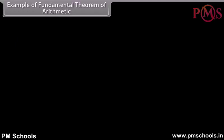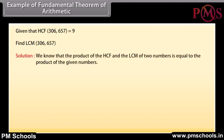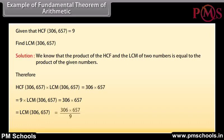Example: Given that HCF(306, 657) equals 9, find LCM(306, 657). We know that the product of HCF and LCM of two numbers equals the product of the given numbers. Therefore, 9 into LCM(306, 657) equals 306 into 657. So LCM equals 306 into 657 divided by 9, which gives LCM equals 22,338.